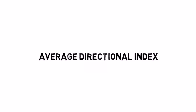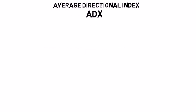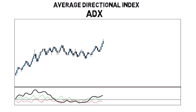The average directional index or ADX is a directional movement indicator used to measure the strength and direction of a trend. It consists of four main components: the ADX line, the plus DI line, the minus DI line, and the 20 level.